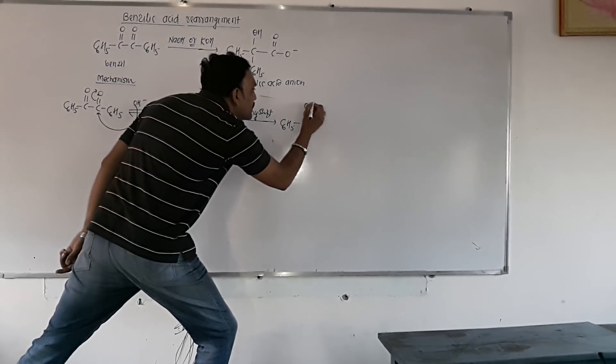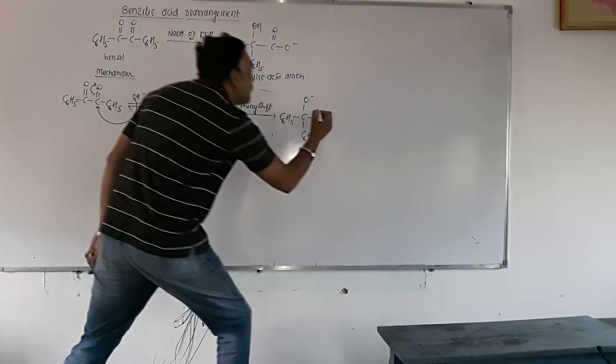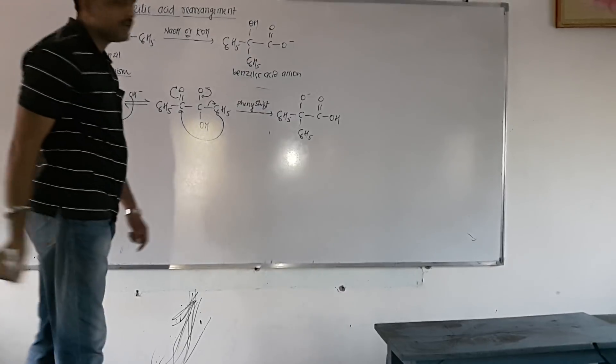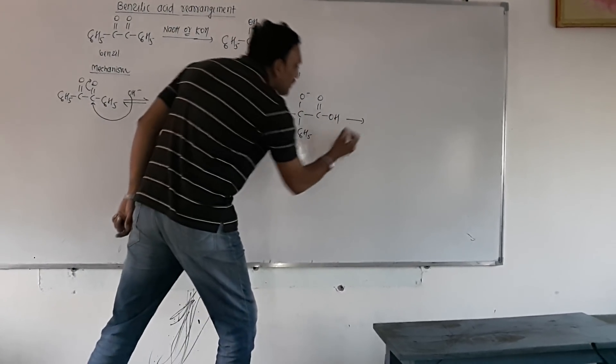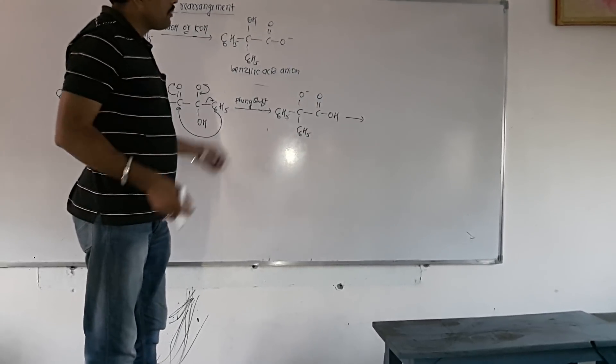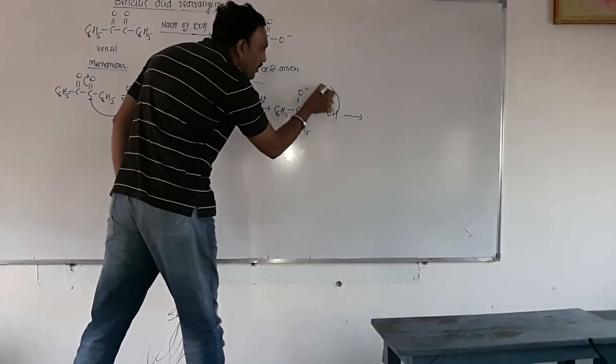So, on phenyl shifting, we may receive an intermediate, which can be represented as. Now, this anion, in order to convert this anion into most stable form, proton shift also occurs.